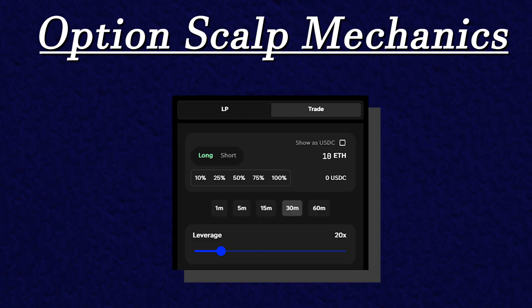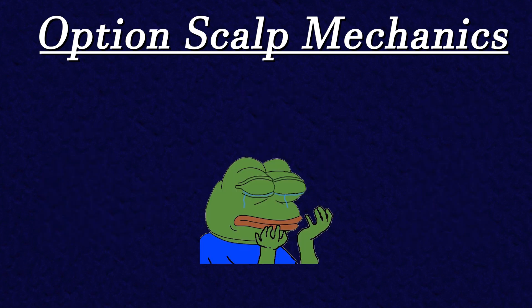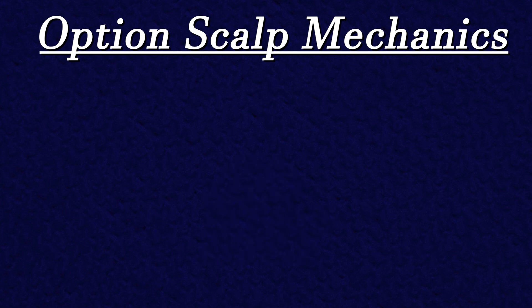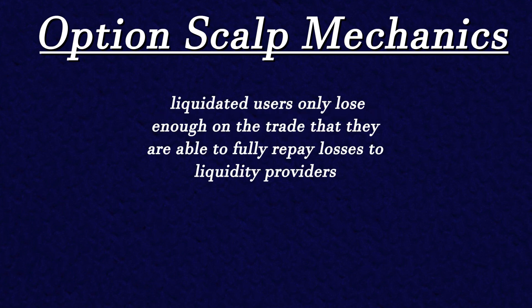Users also have the ability to leverage up on their trades with the help of liquidity providers. By choosing to leverage up on trades, option scalpers will be borrowing money from single side liquidity pools on DOPEX. In order to make sure that liquidity providers aren't financially ruined by users losing all their borrowed liquidity, leverage will only be allowed relative to how much collateral scalpers put up to borrow said liquidity. The design is made so that users who are liquidated will only be allowed to lose enough money on the trade that they can repay the lost money to liquidity providers with their own collateral.